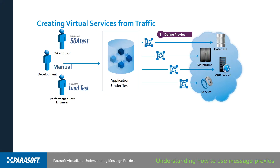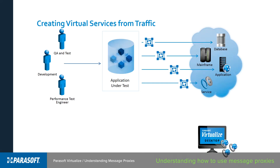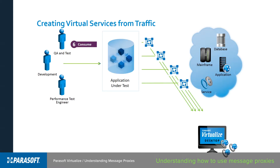Once we have those proxies in place, we can then exercise communication against the application, getting all of the good requests and responses to and from the application and really getting a good chunk of information about how these applications and the dependencies are interacting with each other. We can then take all of that information and deliver it to Parasoft Virtualize, then generate a virtual service that will behave just like a recording. We can then use those proxies for their secondary purpose, which is to redirect communication from the backend system and point that towards Virtualize, where Virtualize will then respond with the information that it just recorded.